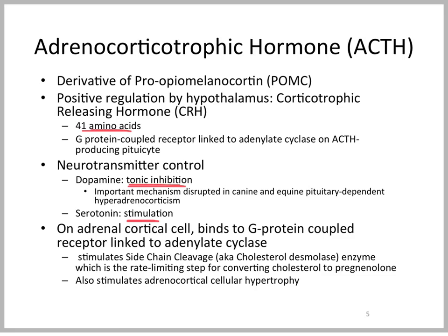ACTH binds to the adrenocortical cell via a G-protein-coupled receptor linked to adenylate cyclase, increasing adenylate cyclase activity. The side-chain cleavage enzyme, also known as cholesterol desmolase, is stimulated as the key rate-limiting step between cholesterol and pregnenolone in glucocorticoid synthesis. ACTH also stimulates adrenocortical cellular hypertrophy, which is why animals with dysregulation of ACTH production can develop bilateral, symmetrical enlargement of the adrenal glands.